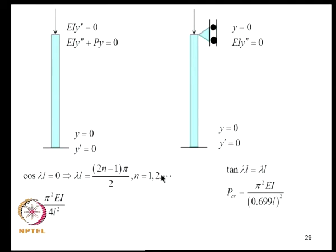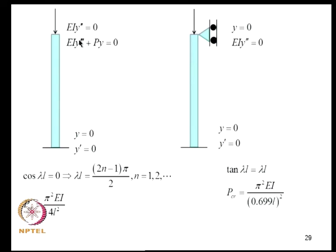For a cantilever beam, one writes the fourth-order equation with four constants and four boundary conditions (Y = Y' = 0 at the fixed end, and appropriate free-end conditions). The characteristic equation becomes cos(λL) = 0. For a propped cantilever the characteristic equation is tan(λL) = λL. The critical loads for each case follow from these equations. The buckling mode shapes have orthogonality properties analogous to vibration mode shapes.